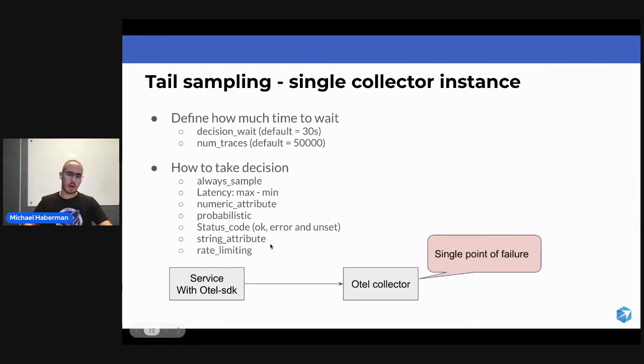Now we have this list of decisions that we can take. We can say always sample. I don't see much value using this processor if you're having always sample, but you can do that.